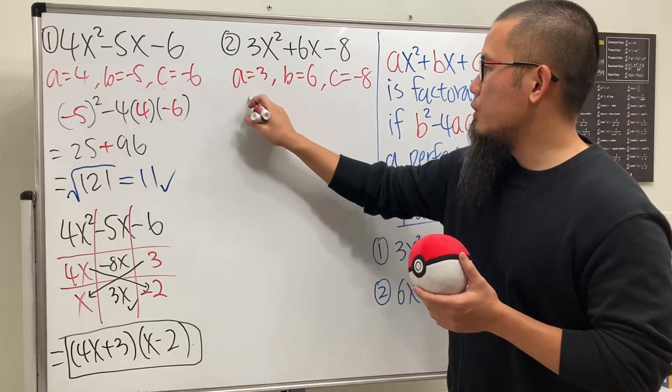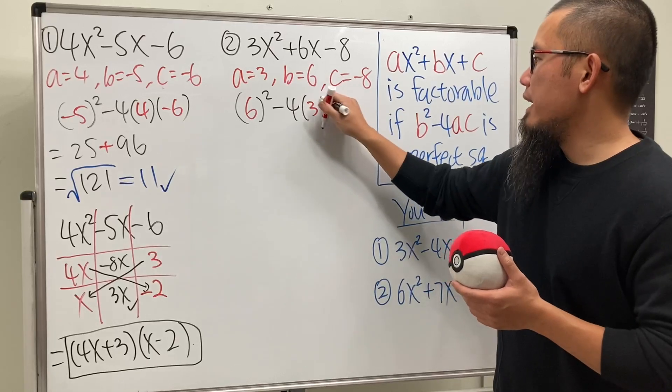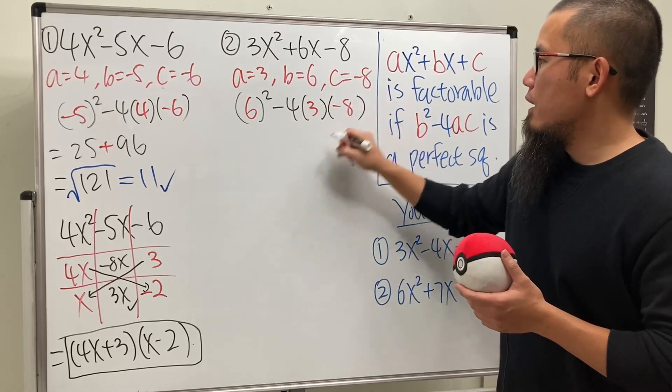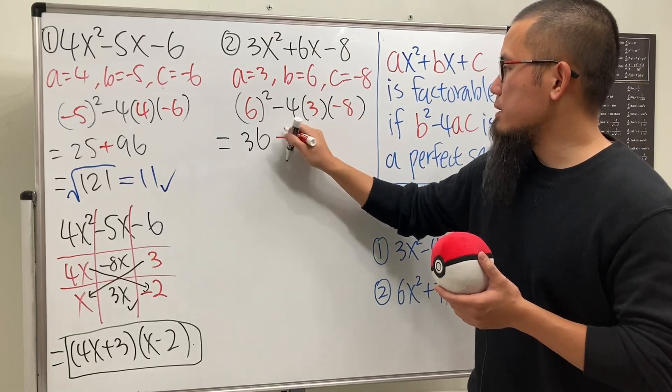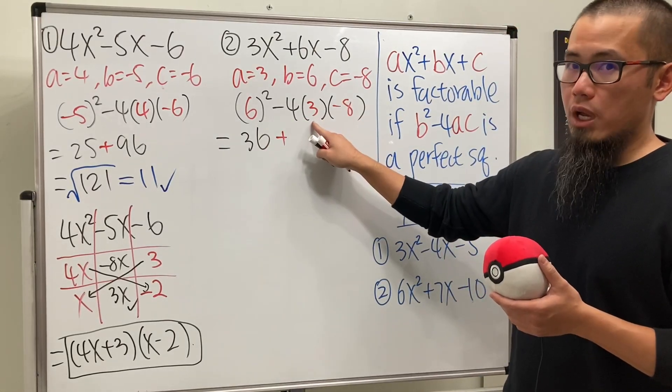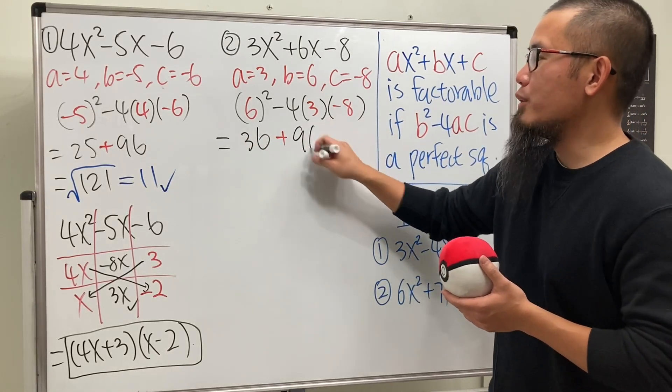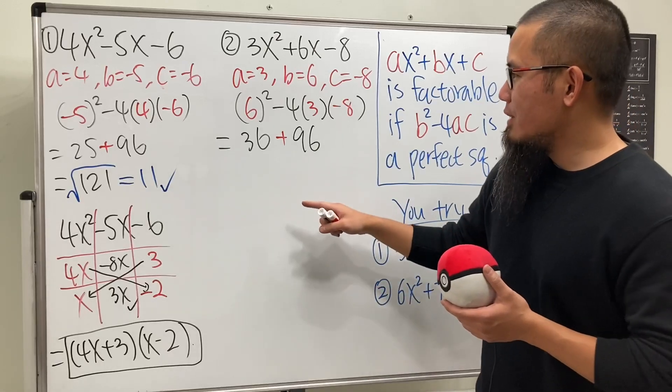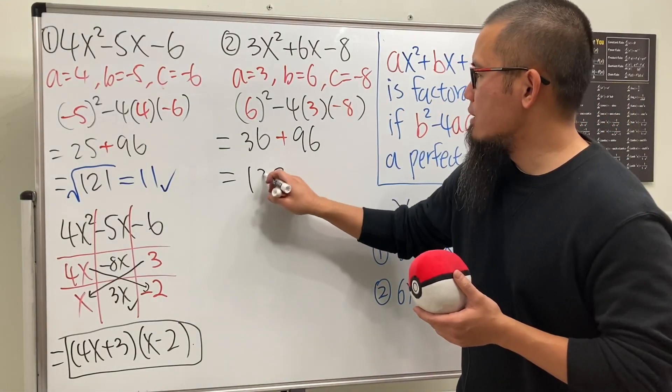Go ahead and work out b², which is 6², minus 4 times a, and then times c. Okay, this is 36. Again, that will give us a plus. This is going to be 12, 12 times 8 is 96. Well, again, I didn't know about that anyway. And then if you just add, this is going to be 132.